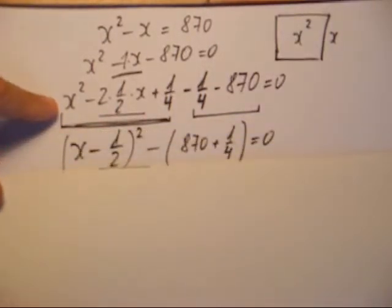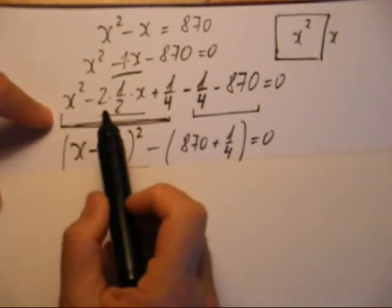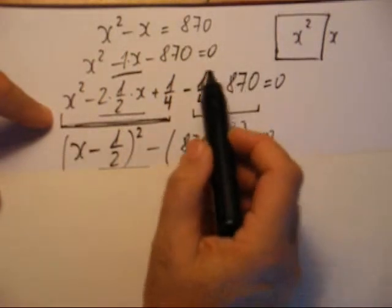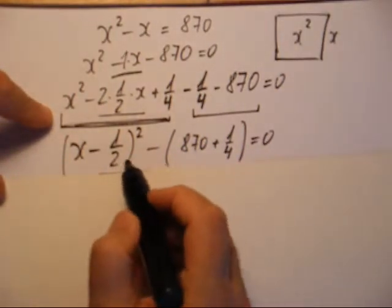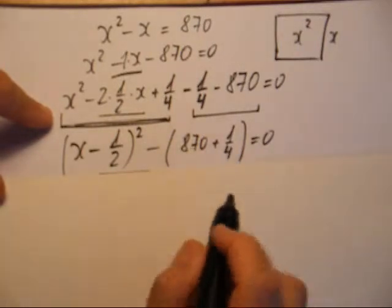Ici c'est x moins 1 demi au carré. a carré moins 2ab plus b carré, c'est a moins b au carré. Et bien sûr je groupe ici les deux termes 870 plus 1 quart. Vous constatez déjà les apparitions, comme dans la solution babylonienne, de ces fameux 1 demi, 870 et 1 quart.